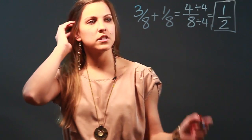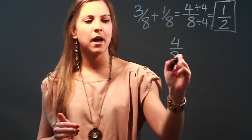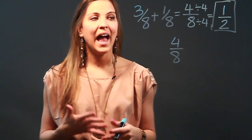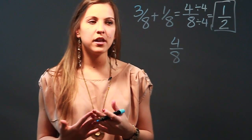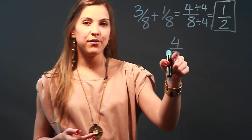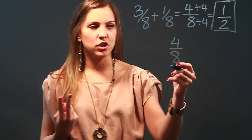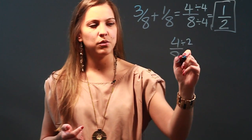Now the other way you can put it in lowest terms, if you can't think of the greatest common factor right away, just think of any common factor. So any number that can go into 4 and 8. And since they're both even, I know right away that they're divisible by 2. So I'm going to start by dividing by 2.